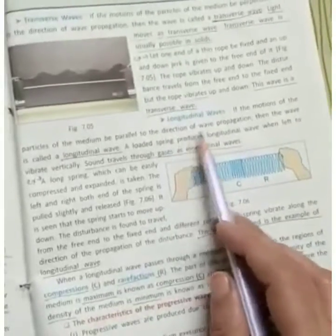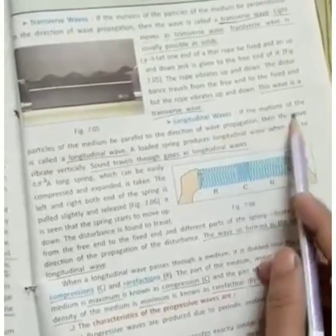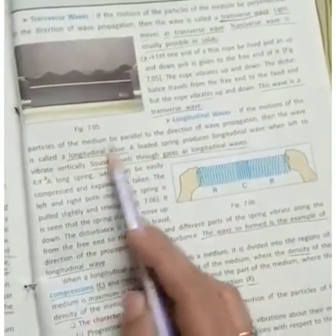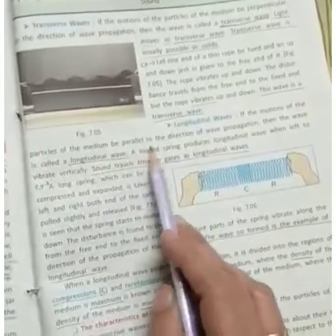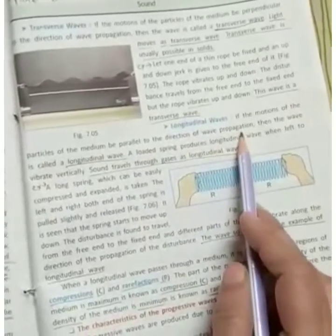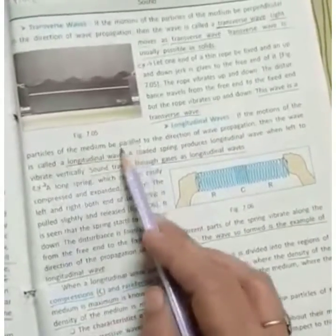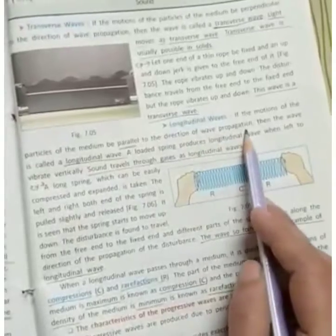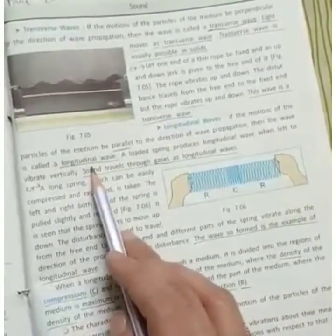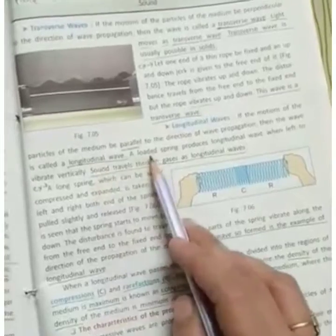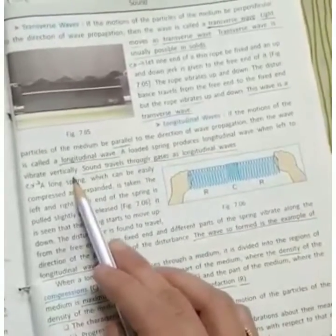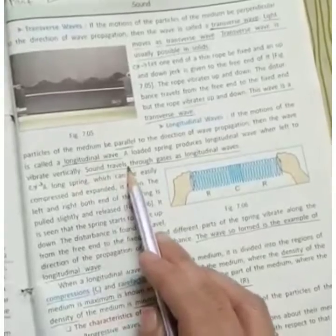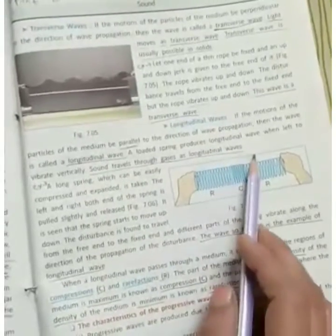Next is longitudinal waves. If the motion of the particle is parallel to the direction of the wave propagation, then we call this type of wave longitudinal wave. A loaded spring produces longitudinal wave when left to vibrate vertically. Sound travels through gases as longitudinal waves.